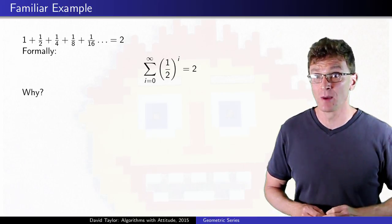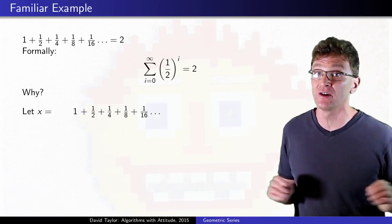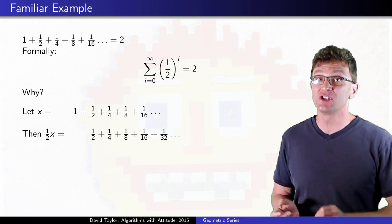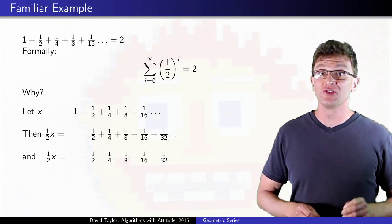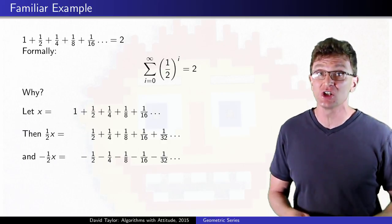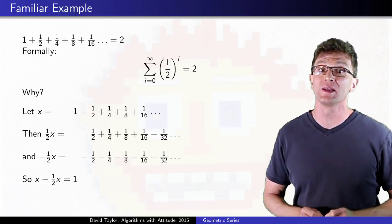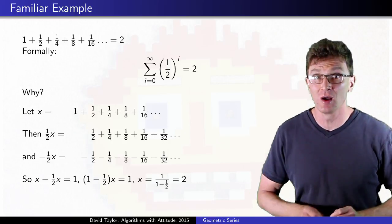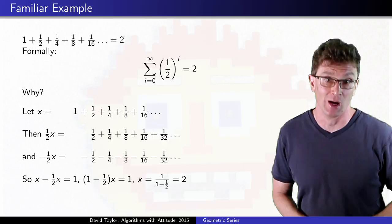To see why the sum equals 2, if you multiply the entire sequence by 1 half, it shifts each term over 1, and then if you subtract out that new summation, everything except the 1 on the right cancels. A touch of algebra, and bibbidi-boppidi-freaking-boo, you're done.